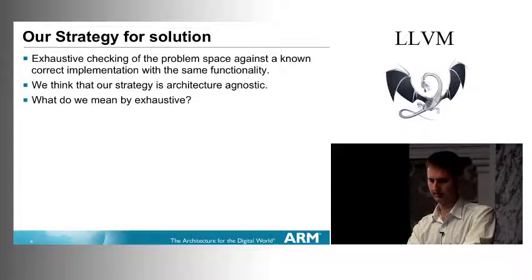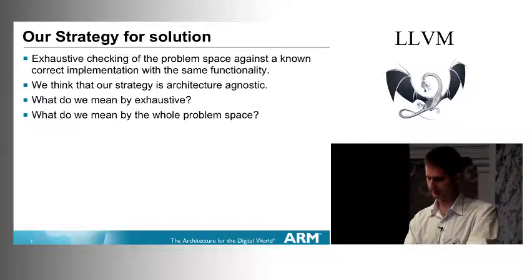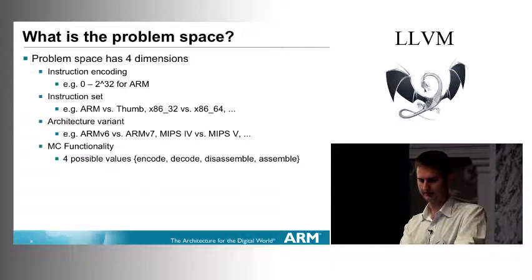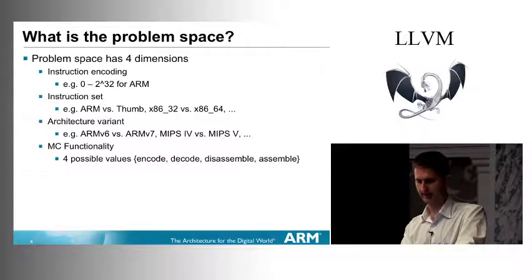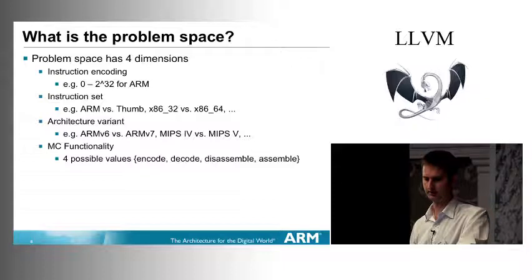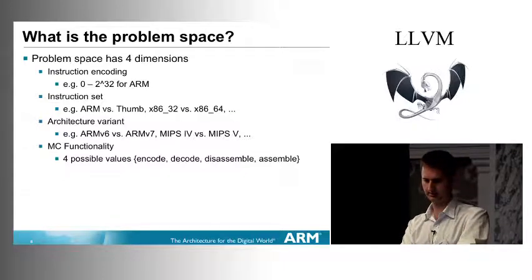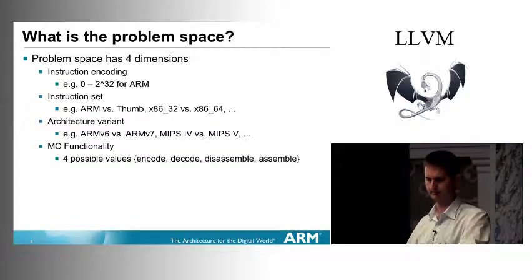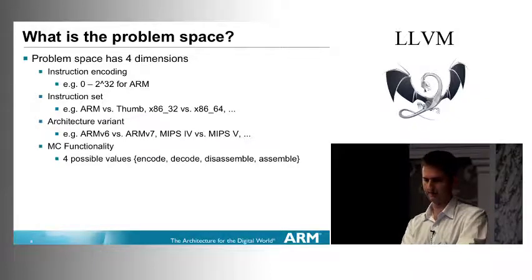We've defined the problem space as having four dimensions. The first is your instruction encoding — a 32-bit number for ARM, though Intel has variable length. The second is the instruction set: ARM has ARM and Thumb, a 16-bit instruction set. The third is the architecture variant — most architectures are built in generations, adding new features while remaining backward-compatible. ARM's current generation is V7. The fourth is the four functionalities we discussed.